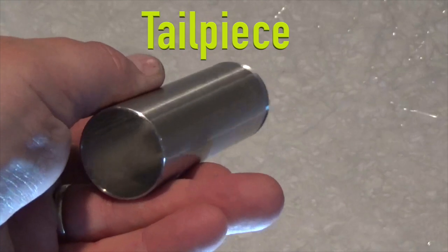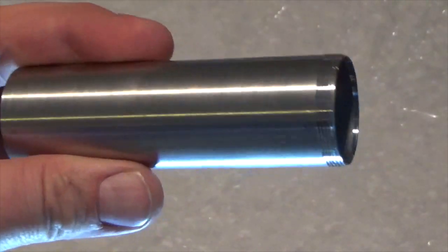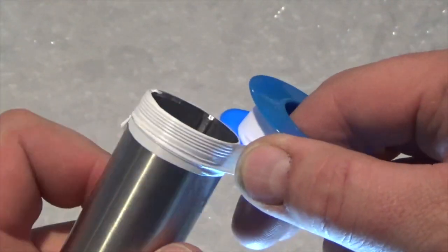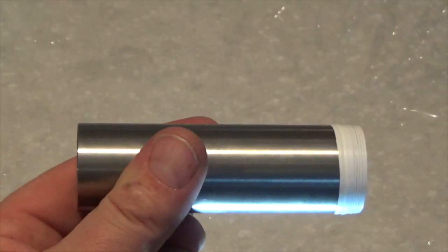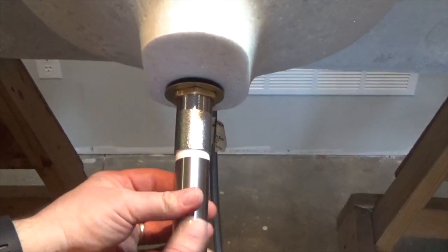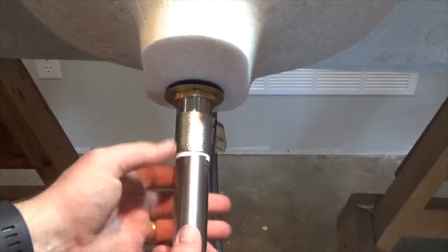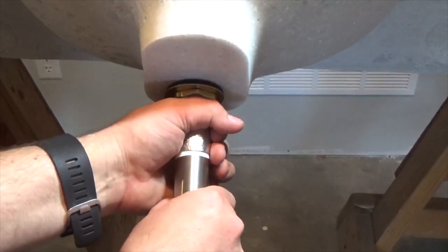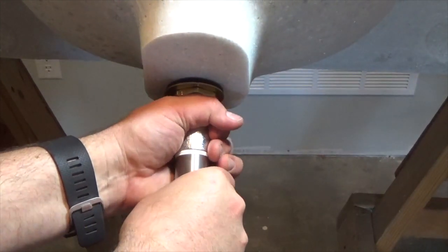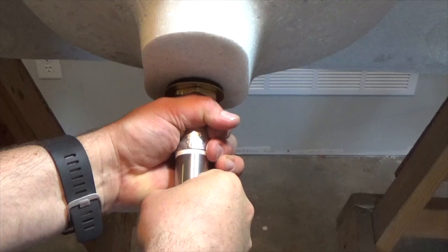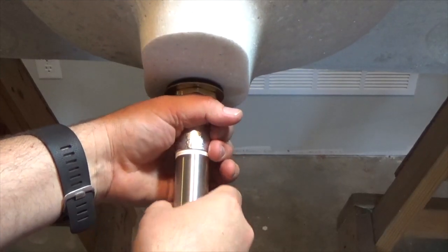Next, take the tailpiece and wrap the threads with Teflon tape. Assemble the tailpiece into the body by threading it into place. Tighten well by hand, and if using a pipe wrench or channel locks, make sure you do not over-tighten and damage the threads.